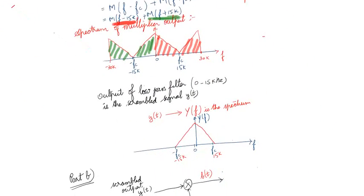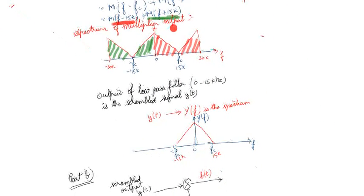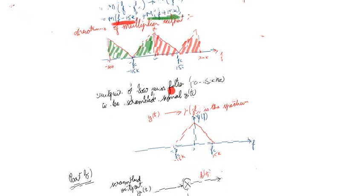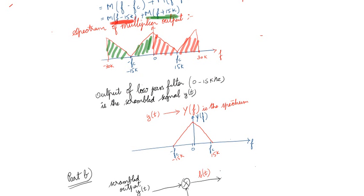The output of the multiplier is the scrambled output going into the low pass filter. The permitting frequency is 0 to 15 kHz, so 0 to +15 and 0 to -15 is permitted, while greater than 15 kHz is blocked. This gives us the spectrum of the output of the low pass filter, which is the spectrum of y(t), that is Y(f).